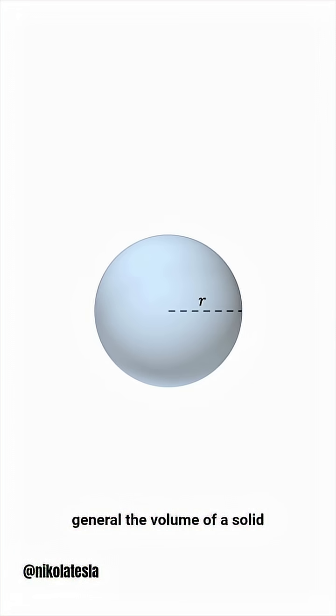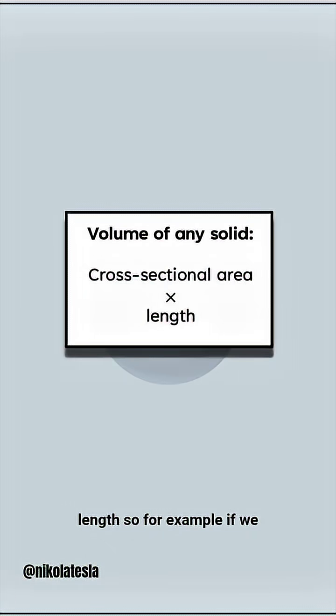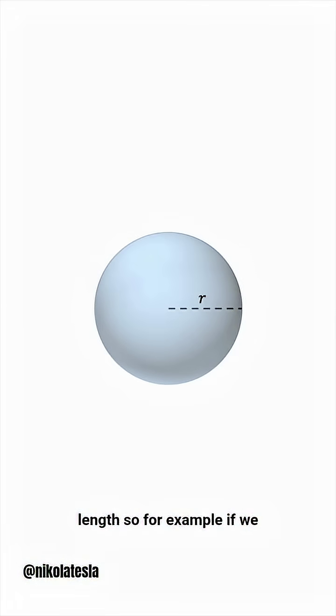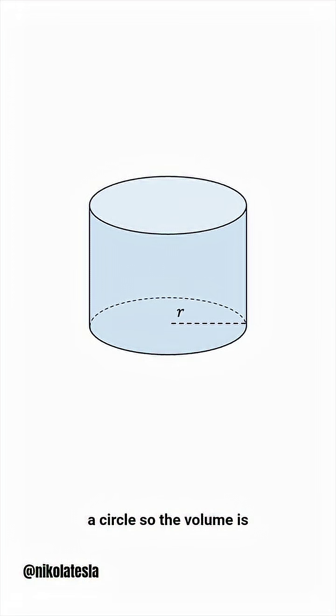In general, the volume of a solid is its cross-sectional area times its length. So, for example, if we have a cylinder, the cross-section is a circle, so the volume is pi r squared h.